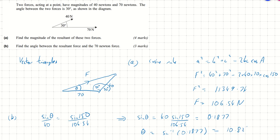So theta is the inverse sine of 0.1877, which is 10.82 degrees to two decimal places. And that's how you do that.